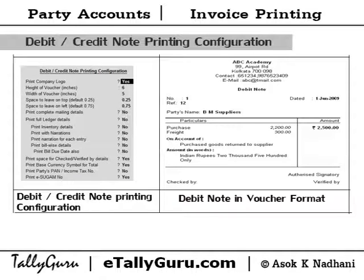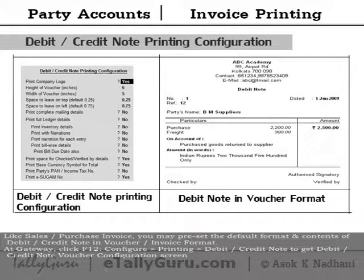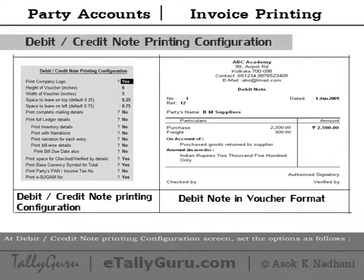Debit credit note printing configuration — like sales and purchase invoice — allows you to preset the default format and contents of debit credit notes in voucher and invoice format. At the gateway, click F12 to configure printing for debit credit notes to get the debit credit note voucher configuration screen.